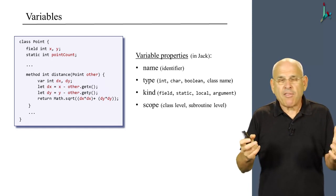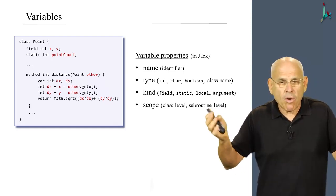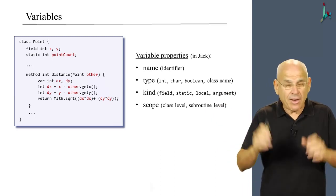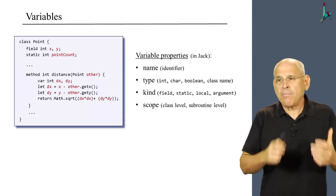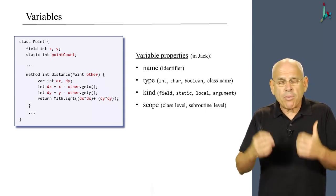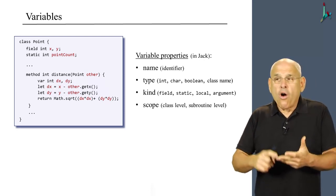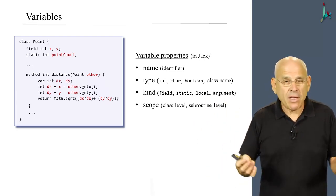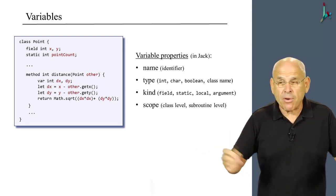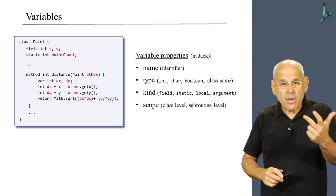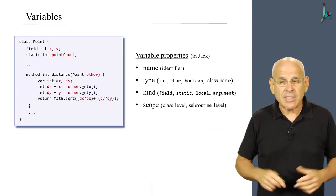So the name of the variable must be an identifier, something that happens in every programming language that I can think of, high level language. The type in Jack can be either one of the three primitive types int, char, or boolean. Or it can be any class name in your application. So in theory, we can have an infinite number of different types.